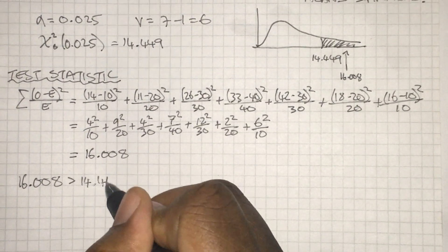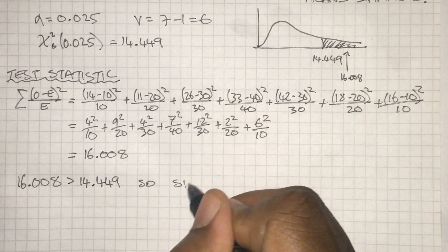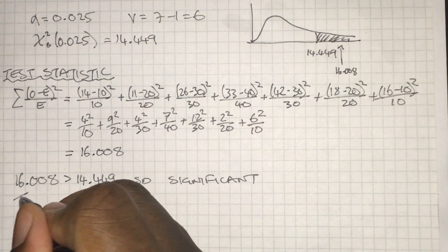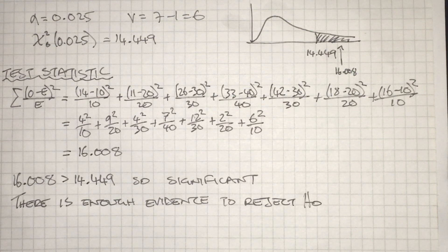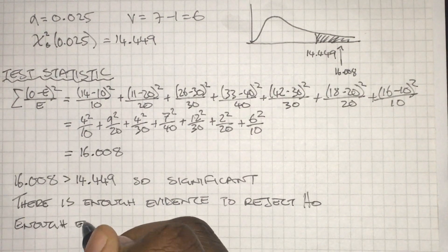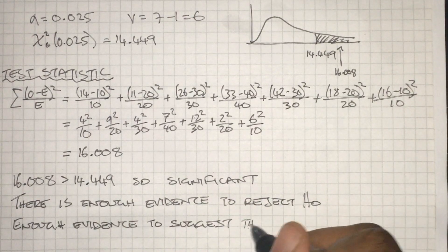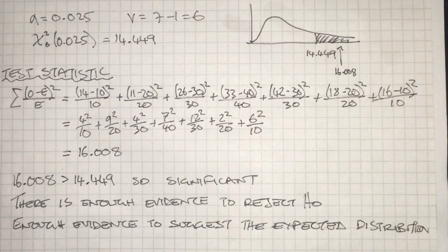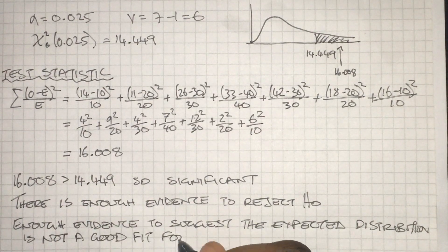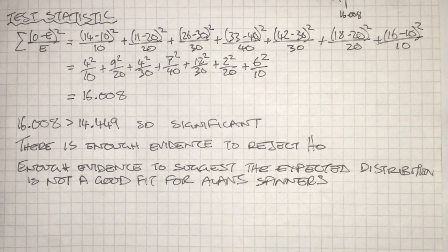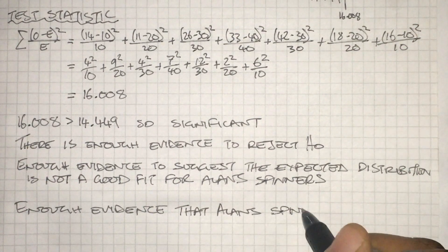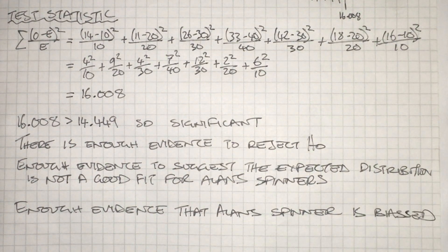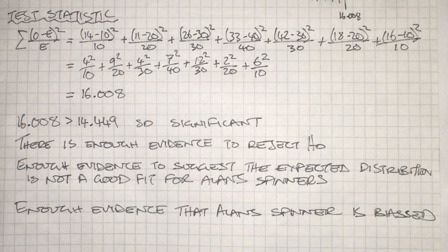Our result is significant, so we can conclude that there is enough evidence to reject H0. In context, that means we have sufficient evidence to say that the model is not a good fit for Alan's spinner. We have evidence to think that actually these spinners are likely to be biased. Just make sure you have your two conclusions - one mathematical referring to H0 and one in context referring to the actual spinners.